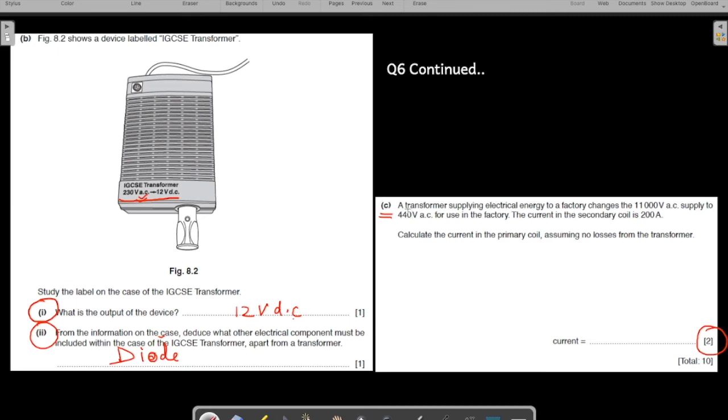So let us come to the C part, which is a two mark question. A transformer supplying electrical energy to a factory changes 11,000 AC volts to 440 volts AC for use in the factory. The current in the secondary is also given to you, 200 amperes. Calculate the current in the primary coil assuming no loss from the transformer. So here there is another equation that we have learned in transformers because there is no power loss.